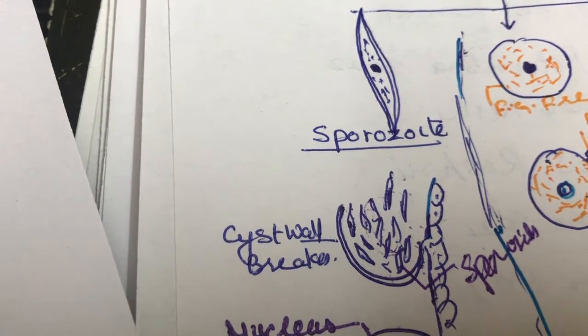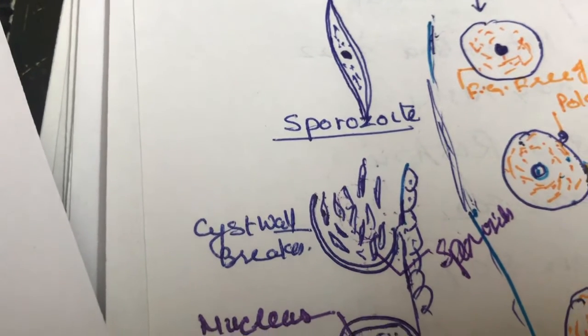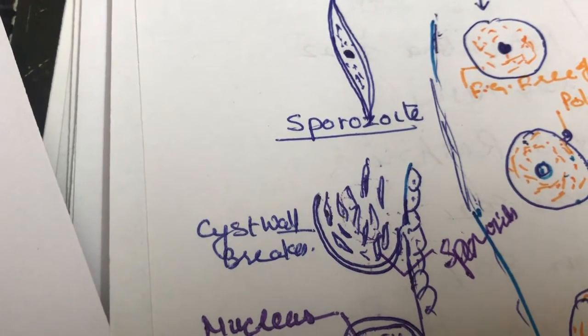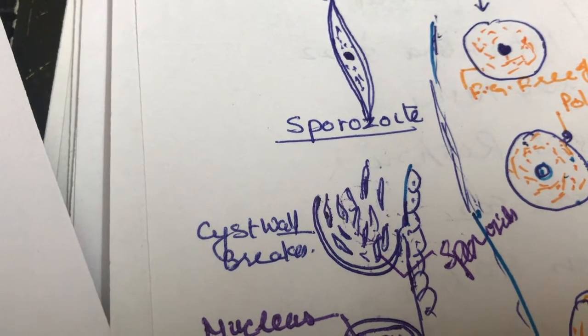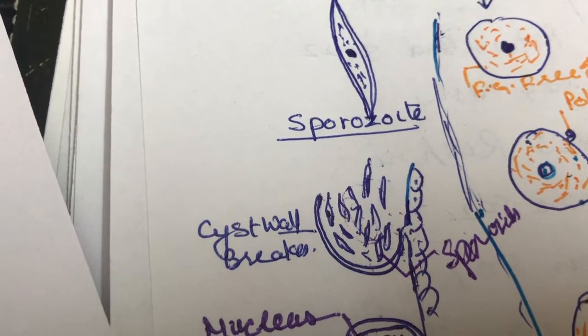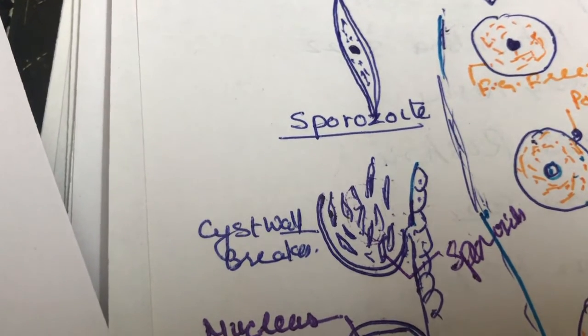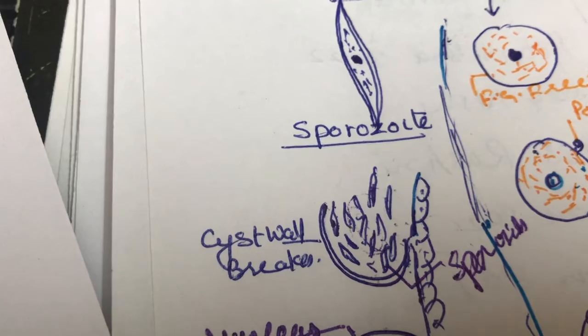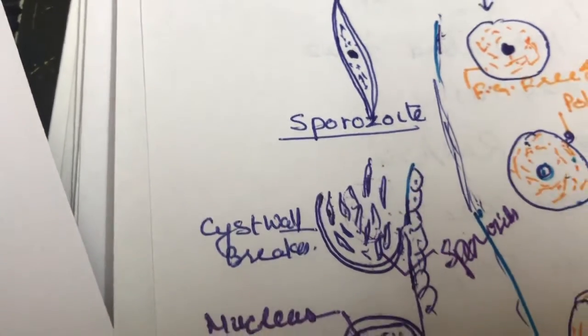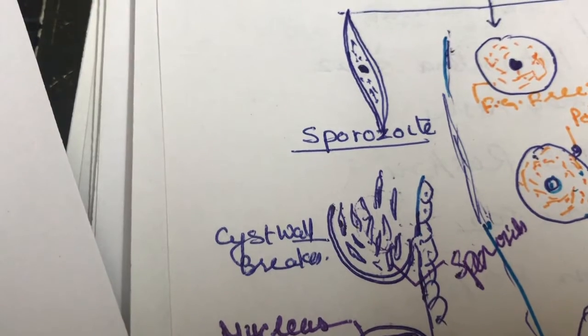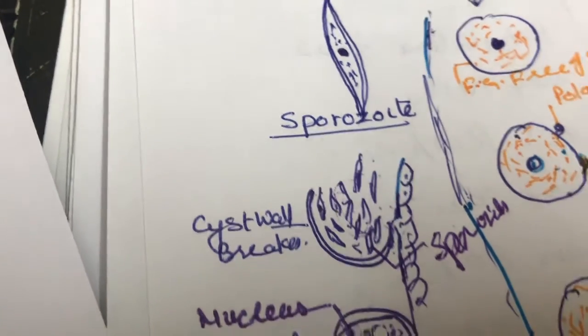But majority of them enter into the salivary gland and wait for their transfer into the blood of man with the mosquito bite. A single infected mosquito contains in its salivary gland about two lakh sporozoites. When it bites and pierces, the mosquito may inject up to 1,000 sporozoites into the man.